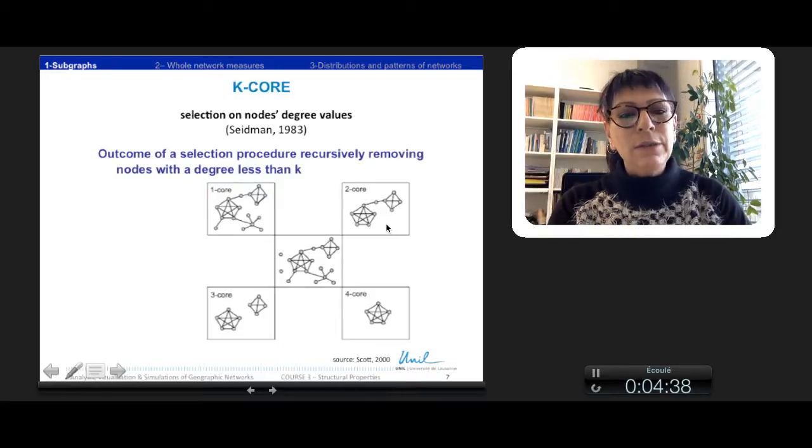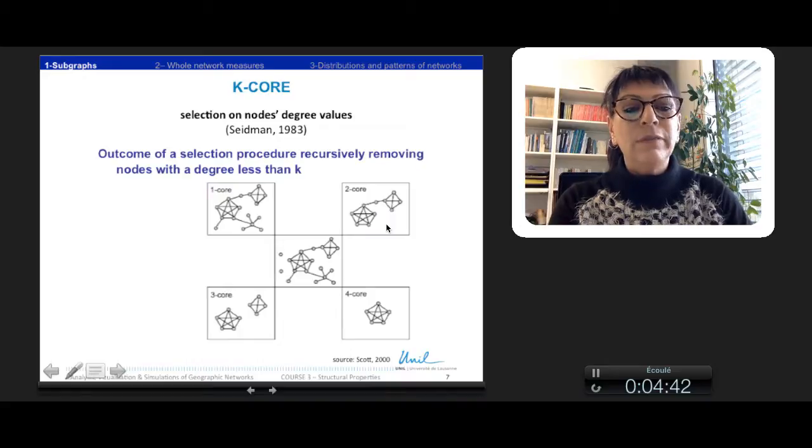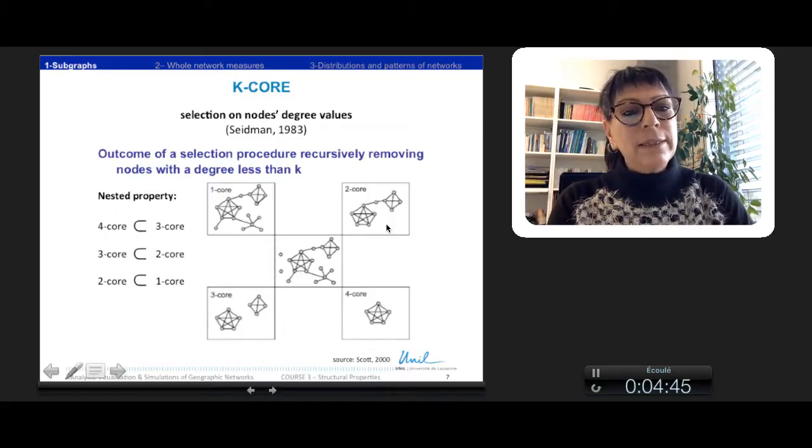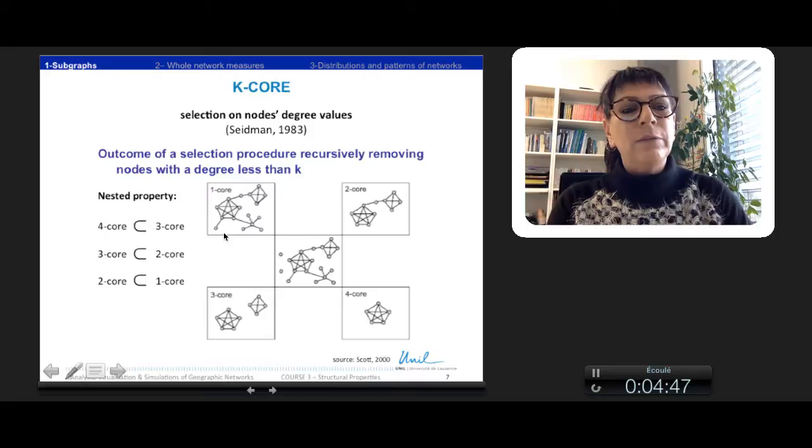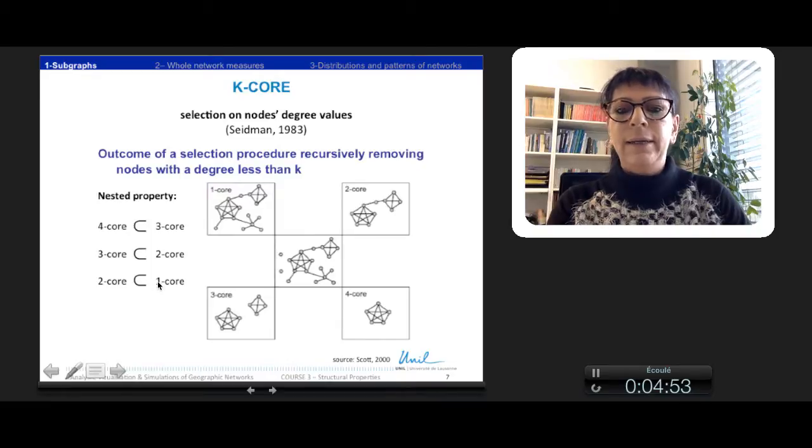It is in this way that this process is a recursive process. And these K-Core have a nested property. The four-core is included in the three-core, the three-core in the two-core, and the two-core in one-core.